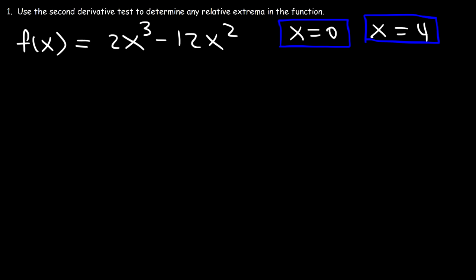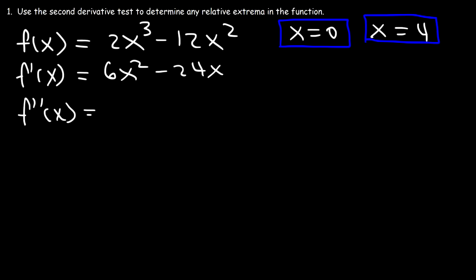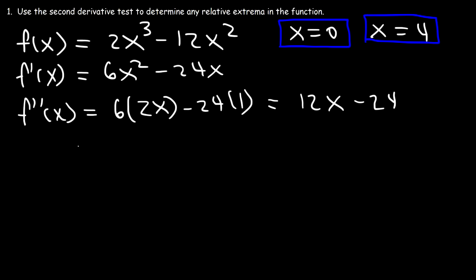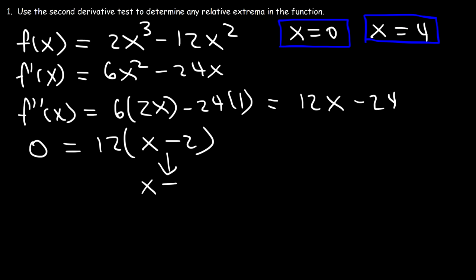Now let's find the second derivative to determine the concavity. The first derivative was 6x² - 24x. The second derivative is 12x - 24. Setting the second derivative equal to 0 and factoring out 12, we get a potential inflection point at x = 2.